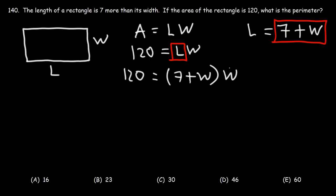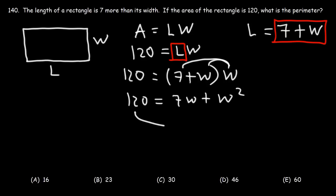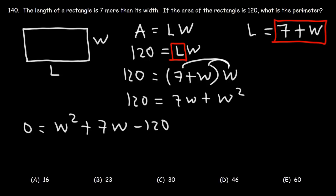Let's distribute W to seven plus W, so we're going to have seven W plus W squared. Now I'm going to move 120 to the other side and rearrange the equation so we have zero equals W squared plus seven W minus 120. Now we need to factor.